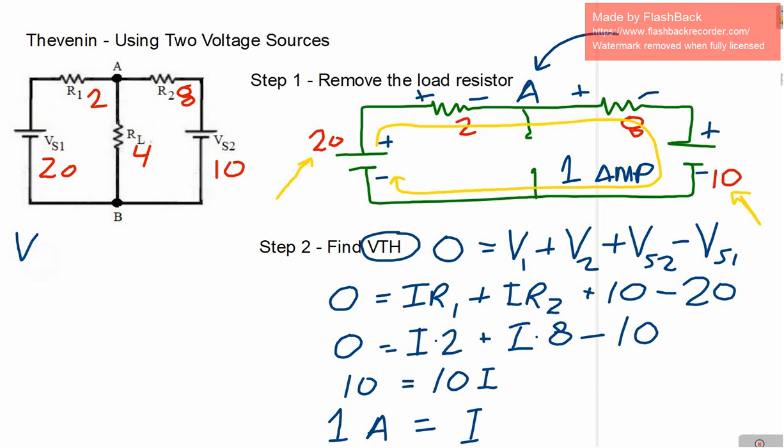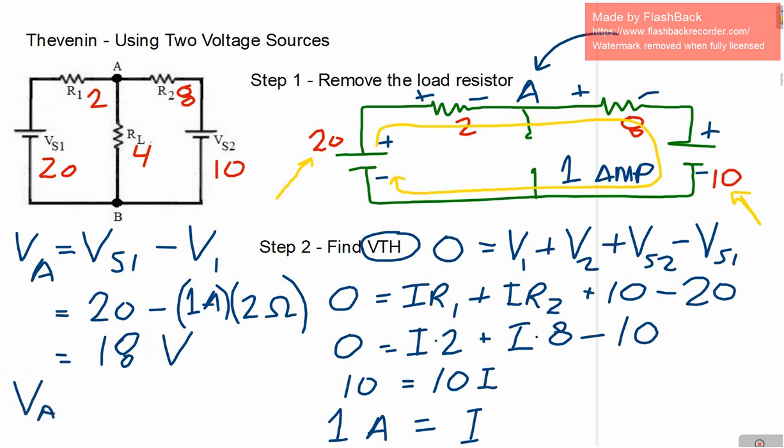So next thing, we can find what the voltage is at node A. All we do is if we start on the left, we're going to take VS1 and subtract the drop across R1. So that's 20 volts, subtract the drop across V1, which is 1 amp moving through 2 ohms. So that's going to be a voltage drop of 2 volts. So that's going to give me VA. So that node voltage there is going to be 18 volts. And that is our Thevenin voltage. So the Thevenin voltage in this example is 18 volts.